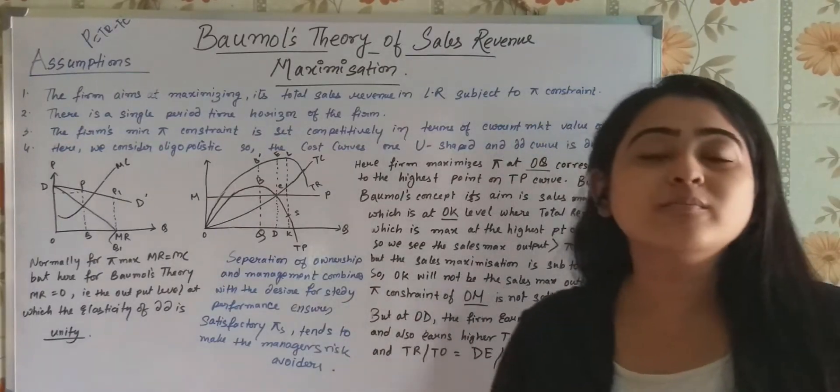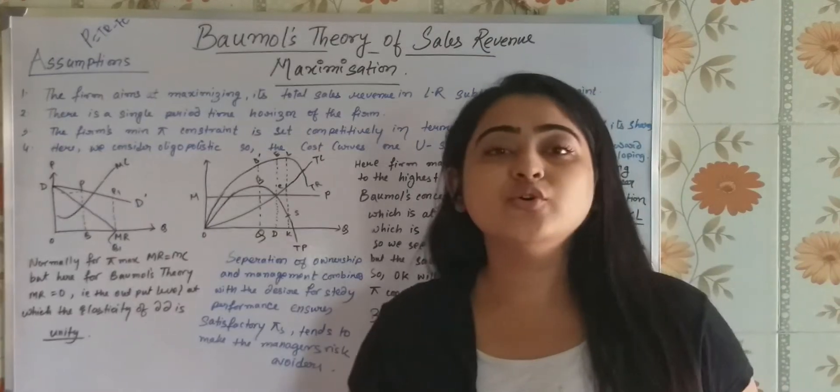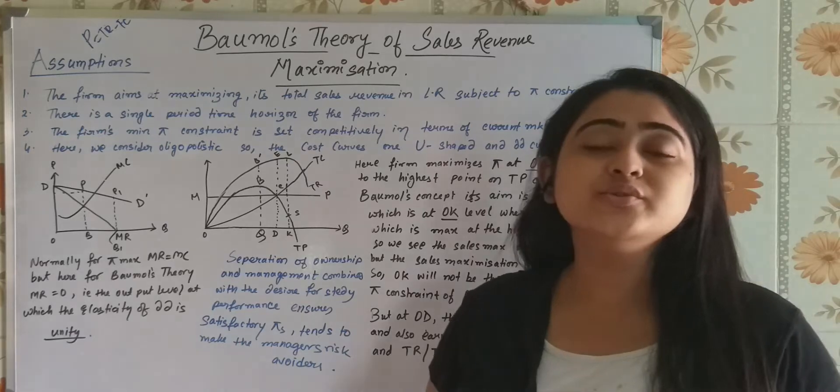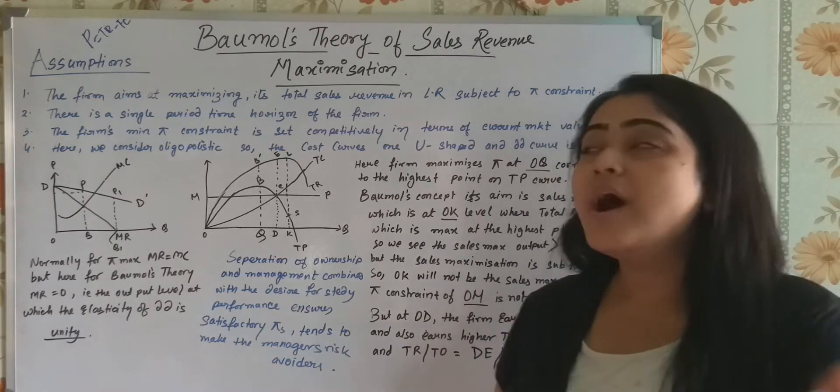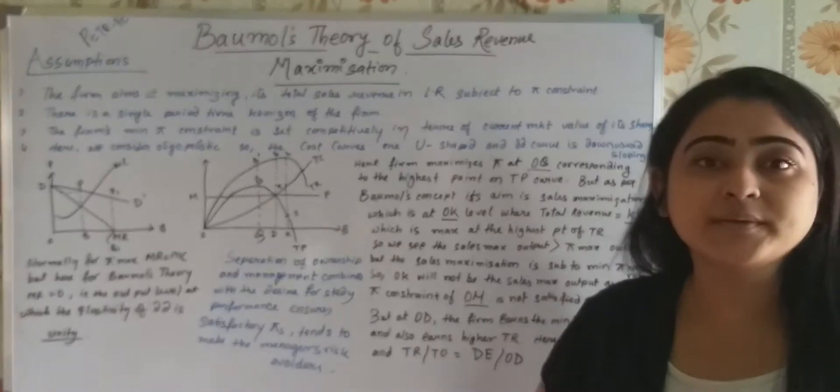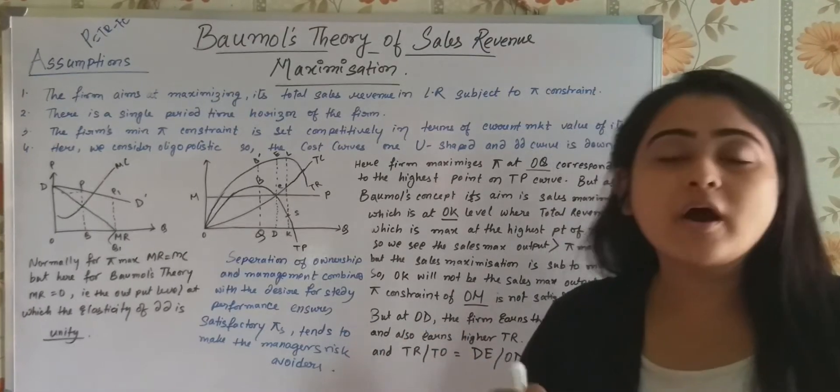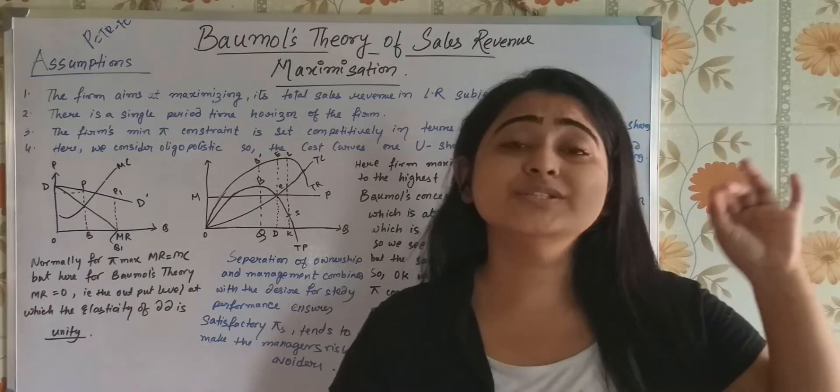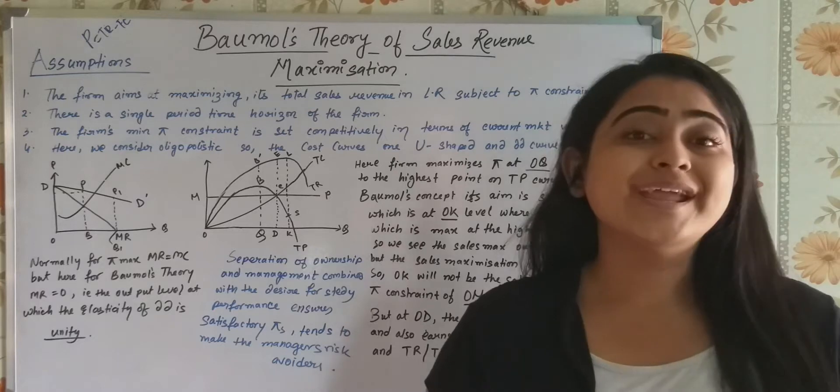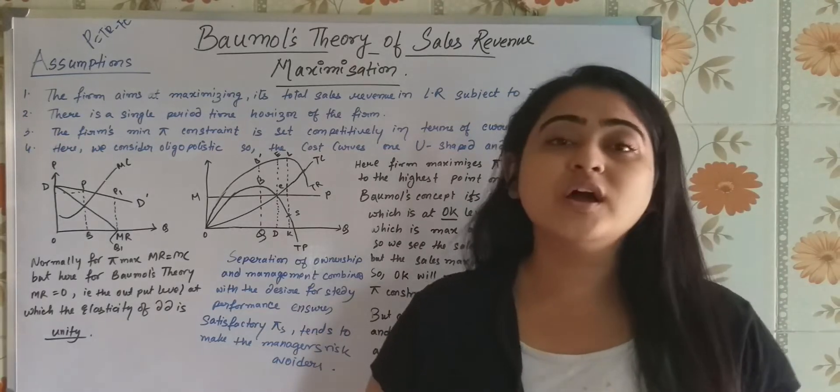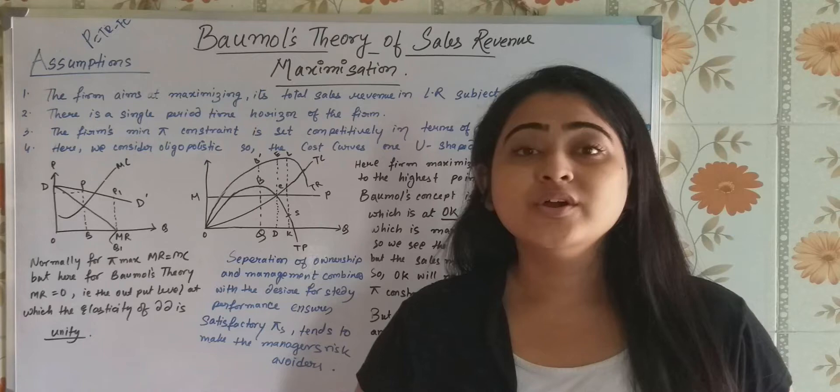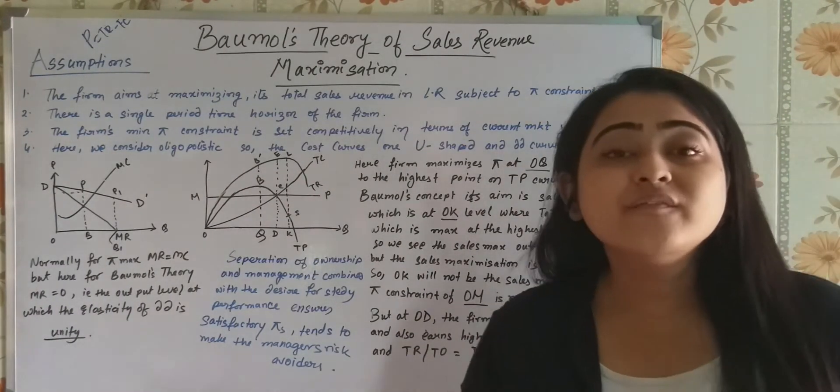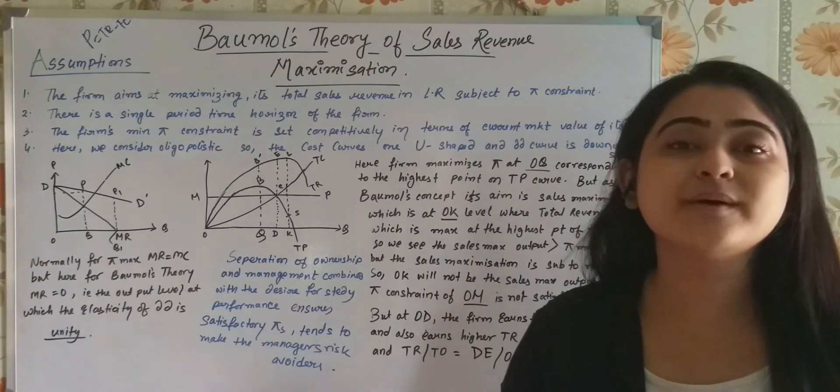Now here comes Baumol's theory. We already have a theory of profit maximization, right? And to criticize that theory, to tell something about the theory, we discuss Baumol's theory. As per Baumol's theory, he says that it's not profit maximization that should be the golden rule or main objective of a business organization. What it should be is sales maximization. Revenue should be collected from sales maximization.